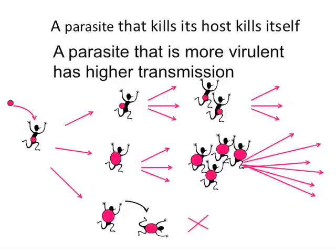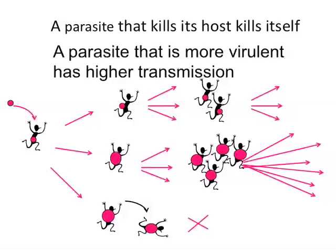The other side of this argument is that a parasite which exploits its host more by taking more resources from the host is one that transmits more. But the problem is that that parasite will kill its host. So the parasite has to balance this higher level of transmission against the potential cost of host death. That's the trade-off we're talking about here.